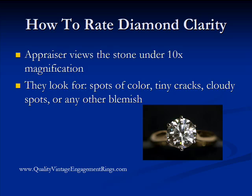When a diamond is rated for clarity, the appraiser views the stone under 10 times magnification. That's the standard across the board. As they're looking at the stone, they're looking for different spots of color — either black, white, or any color on the rainbow — and maybe tiny cracks, cloudy spots, or any other type of blemishes. Anything that detracts from the natural purity of the diamond is considered a blemish, and the term used to refer to those flaws is inclusions.